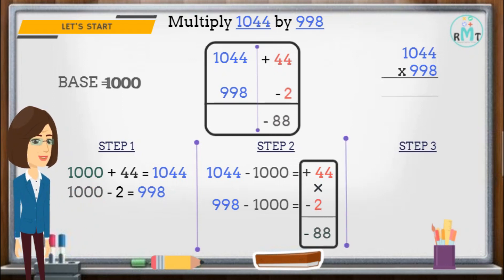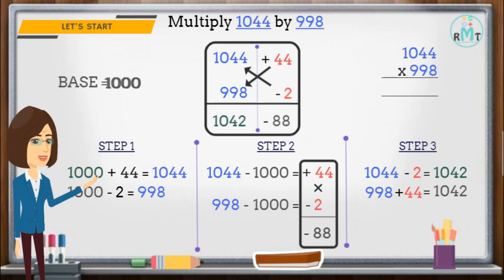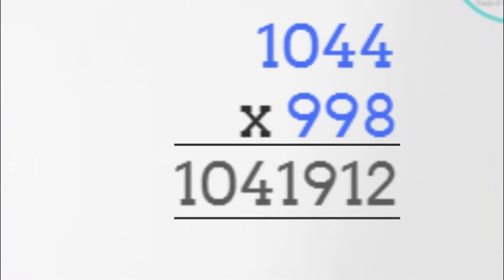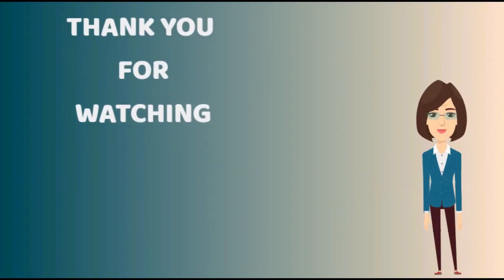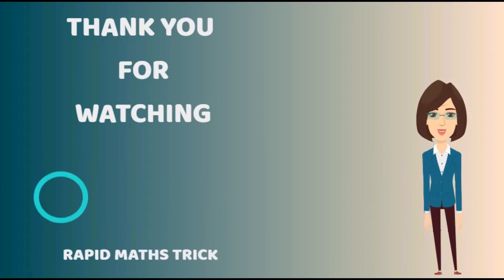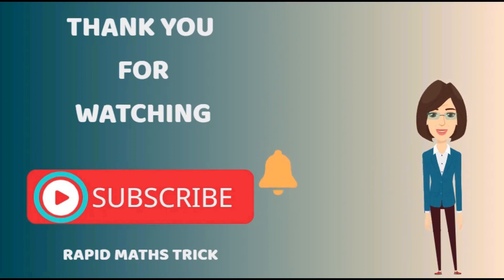Step 3: now we subtract 2 from 1044, or we add 44 with 998 — we get the same answer, which is 1042. Next, we multiply the left-hand digit, which is 1042, with the base and subtract the right-hand side digit to get the final answer. So the final answer is 1,041,912.